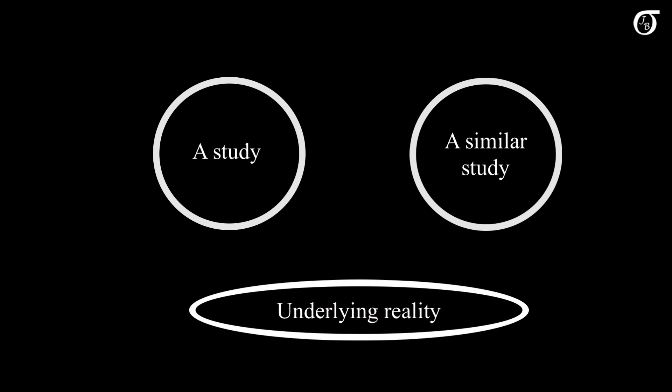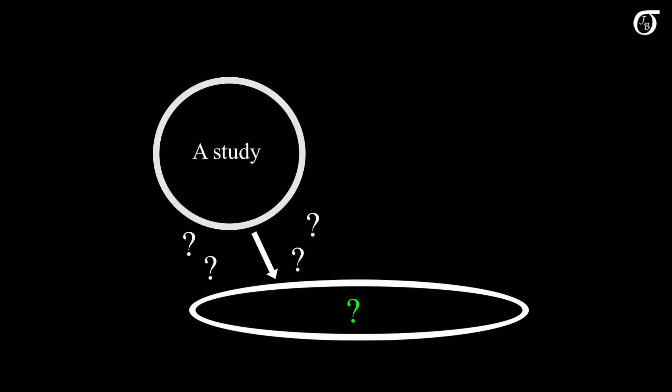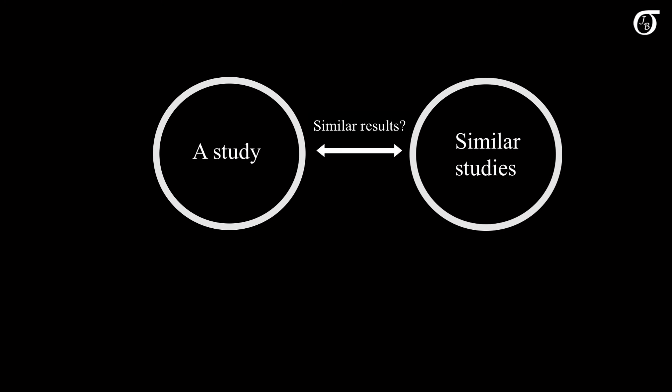Now keep in mind that the real reason we care about similar studies having similar results is that they both tell us something about the underlying reality. They are both based on some underlying reality. And if they're both adequately reflective of the underlying reality, then they should tend to have similar results. What we are really looking for is studies that effectively inform us about the underlying reality. But since we can't possibly compare the results of a given study with that unknown underlying reality, comparing it to other studies does help in the search for the truth.